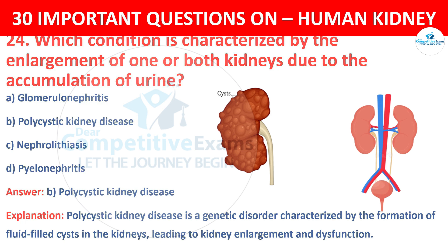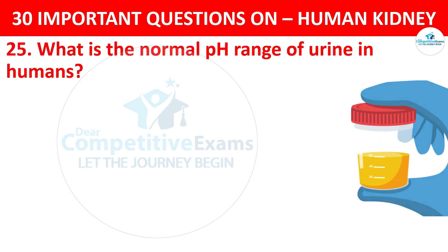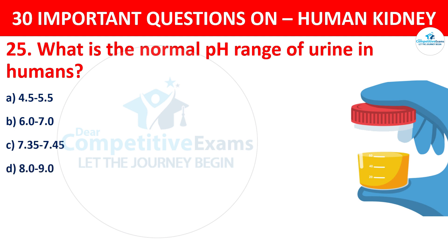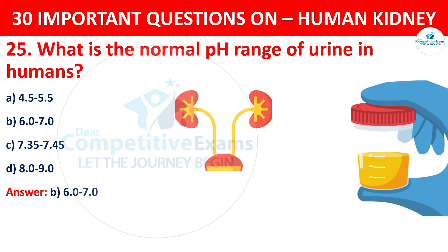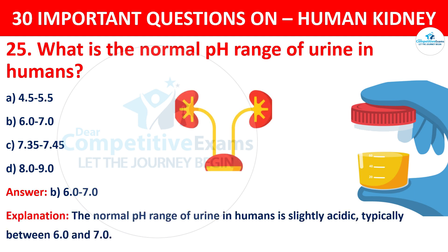Question number 25. What is the normal pH range of urine in humans? The options are 4.5 to 5.5, 6.0 to 7.0, 7.35 to 7.45, or 8.0 to 9.0. The correct answer is B, that is 6.0 to 7.0. The normal pH range of urine in humans is slightly acidic, typically between 6.0 to 7.0.